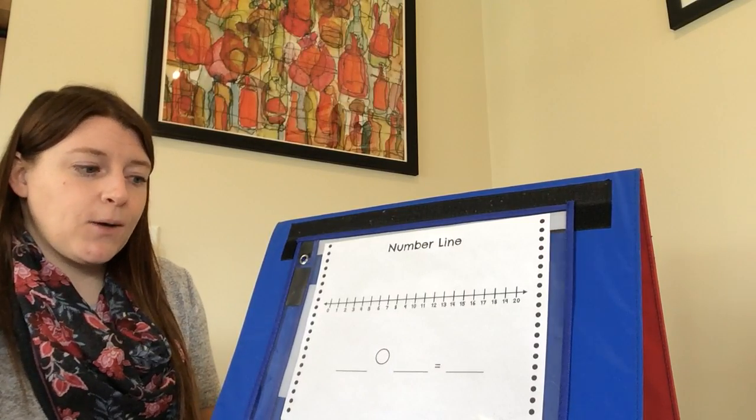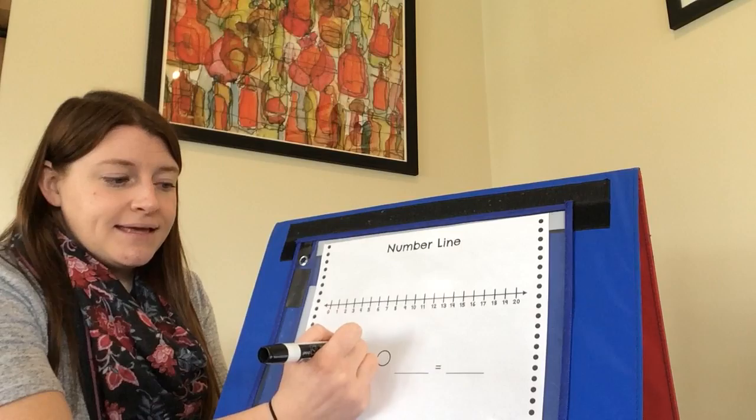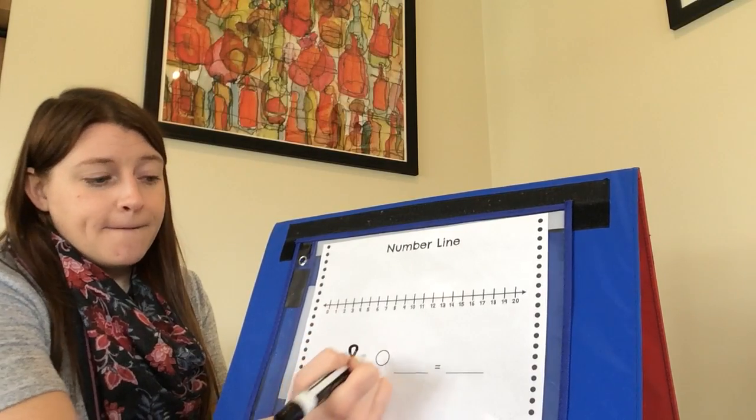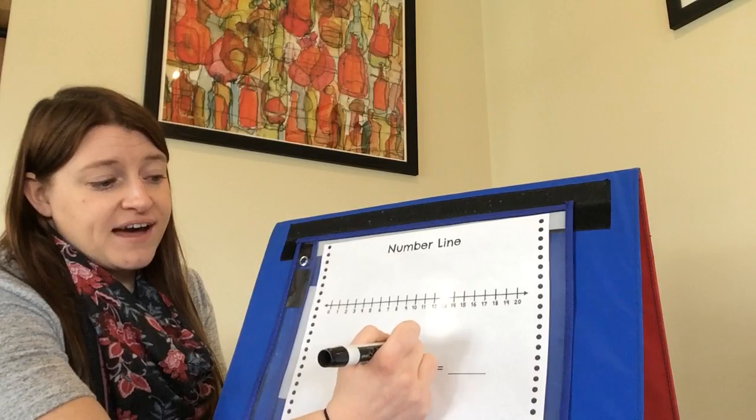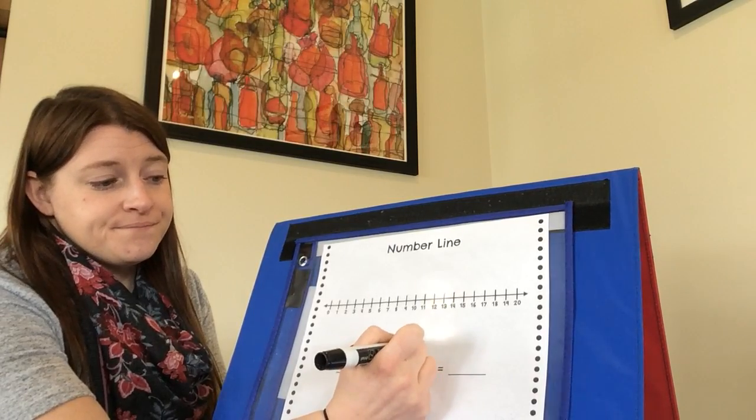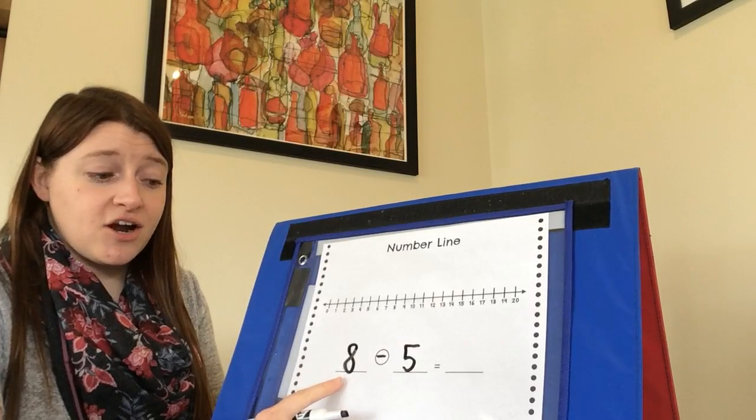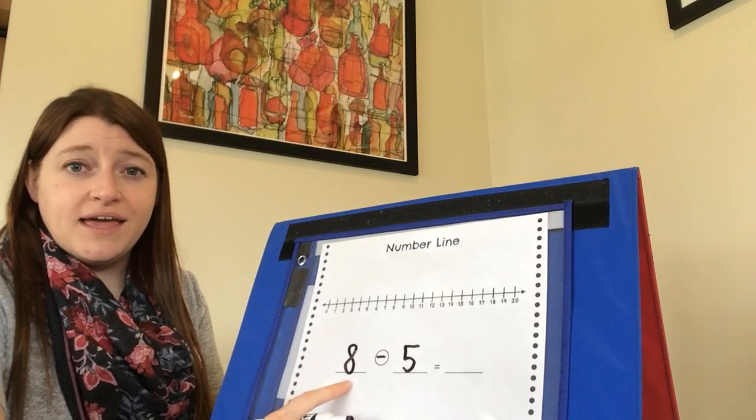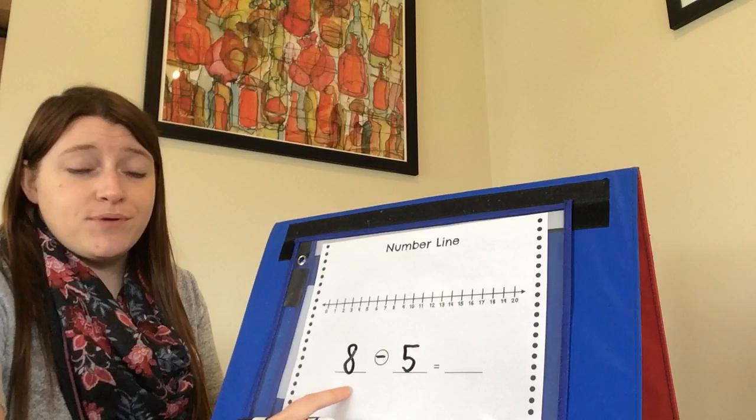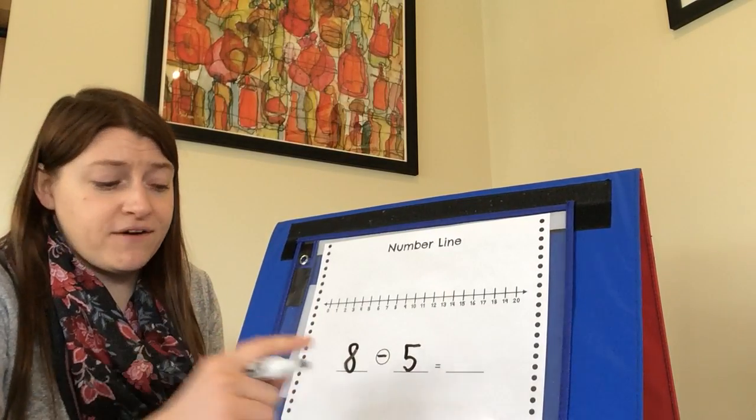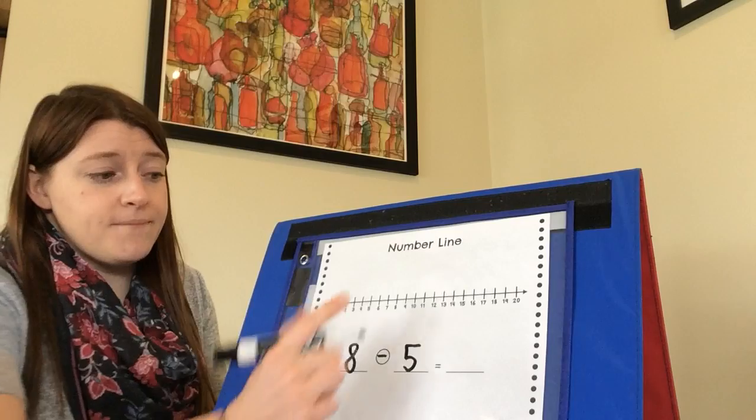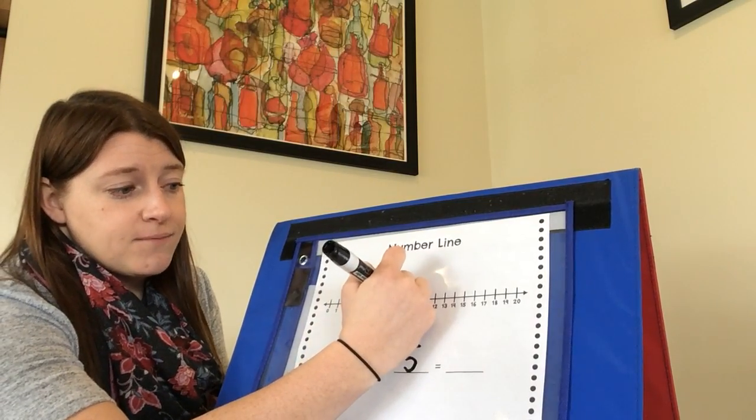Okay, this time how about we do eight minus five. To solve eight minus five on a number line, I start by putting a dot on the number eight. That's the first number in my problem, the number of things that I'm starting with if I was solving a word problem. So go ahead and put a dot on the number eight.